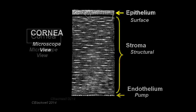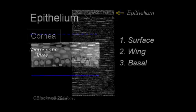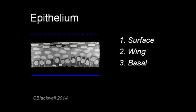Back at the microscope view, we see the outer surface layer of the cornea, the epithelium. In this closer view, you can see the individual cell layers, which are labeled.